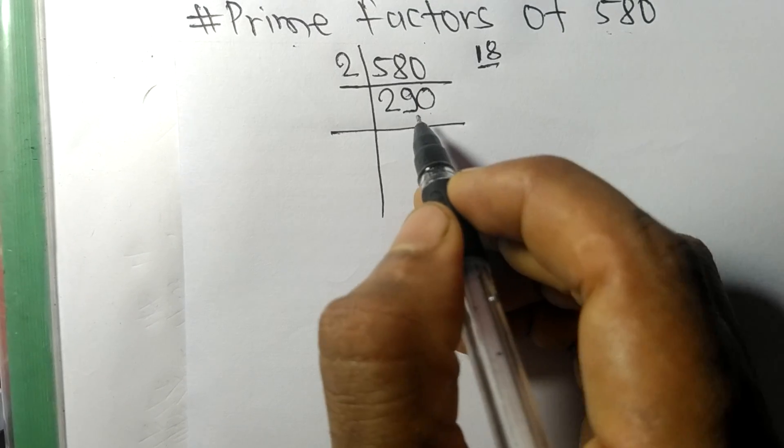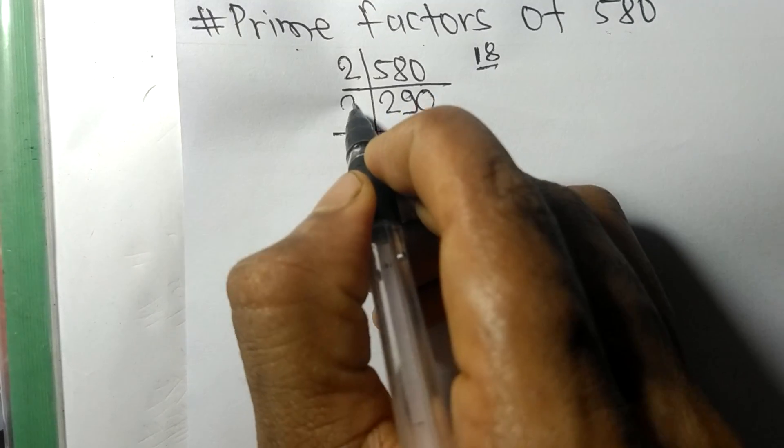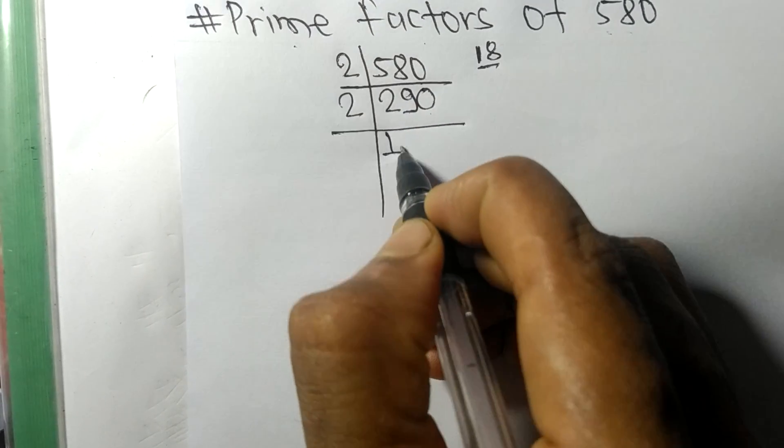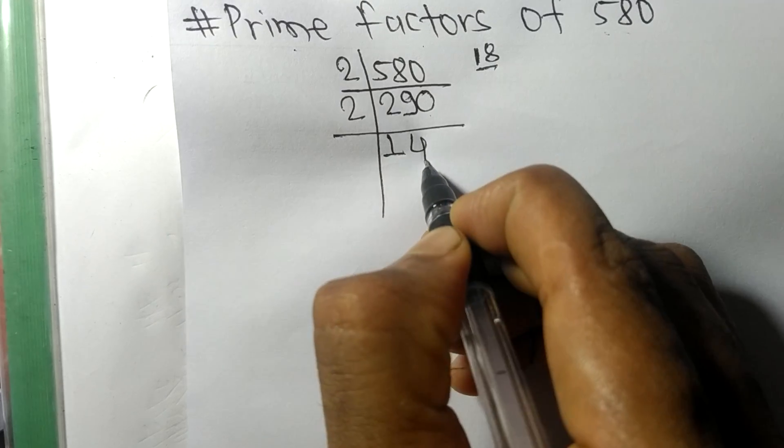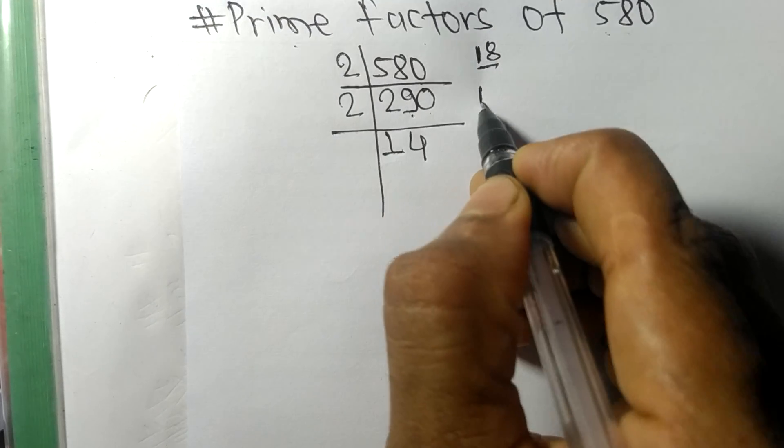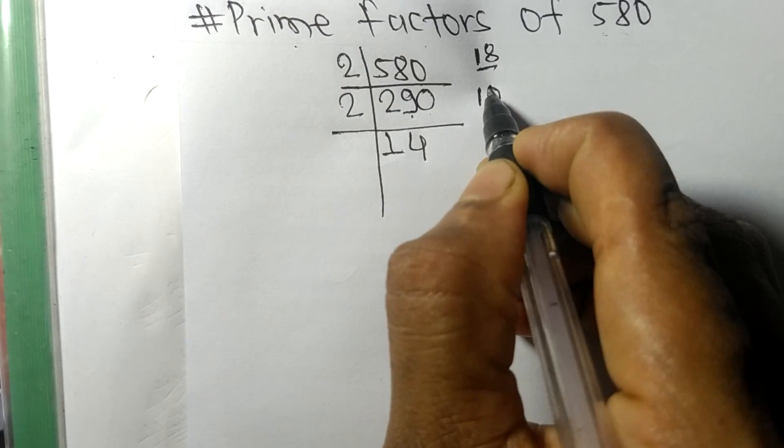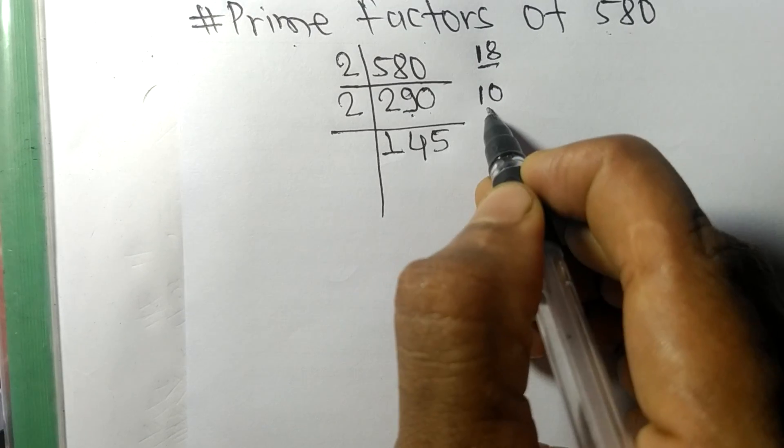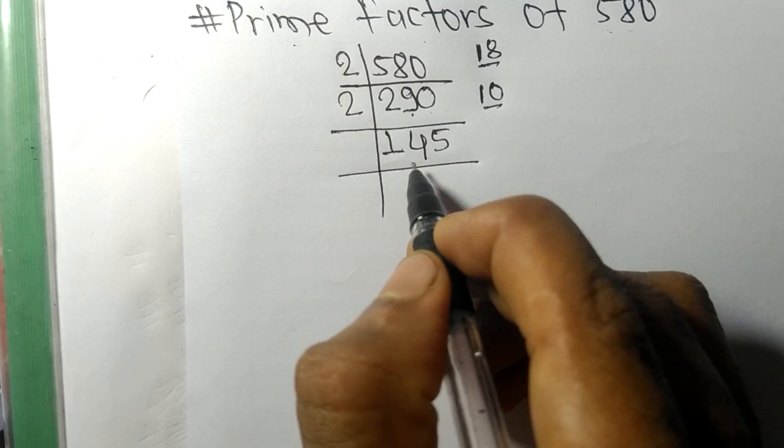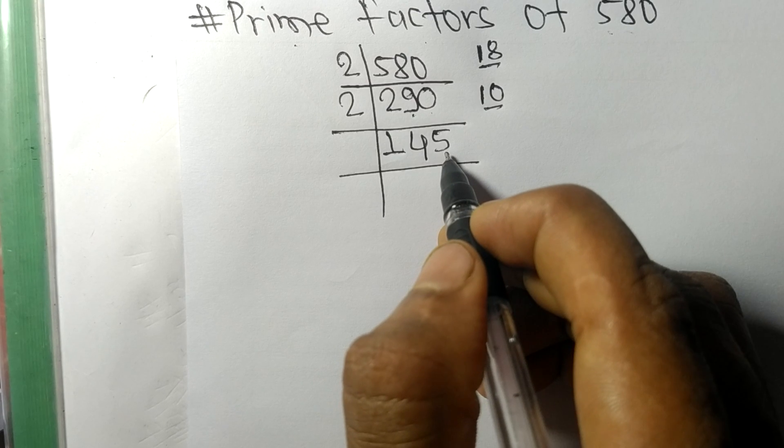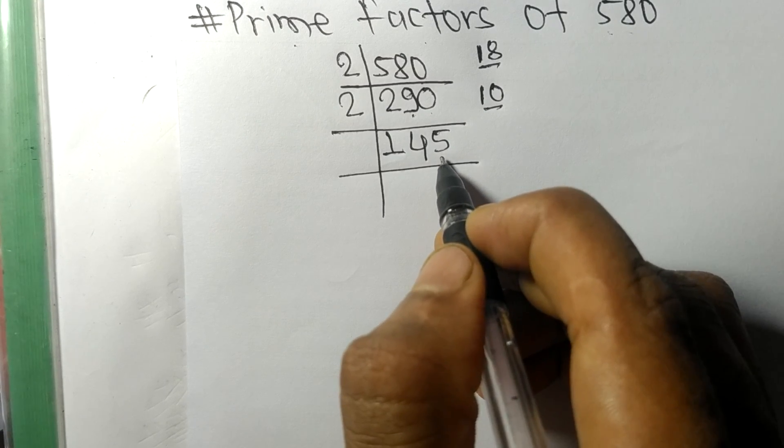0 at the last so it is divisible by 2. 2 times 1 means 2, 2 times 4 means 8 remainder 1, and 0. 10, 2 times 5 means 10. So now we got 145 and it has 5 at